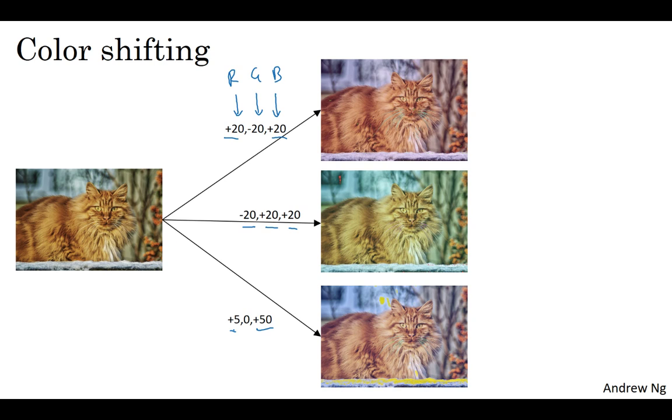The motivation for this is that if maybe the sunlight was a bit yellower, or maybe the indoor illumination was a bit more yellow, that could easily change the color of an image. But the identity of the cat, or the identity of the content, the label Y, should still say the same. And so introducing these color distortions, or by doing color shifting, this makes your learning algorithm more robust to changes in the colors of your images.